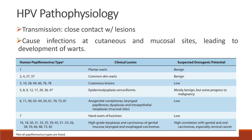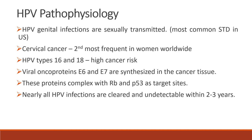Types 16, 18, 30, 31, and so on have high correlation with genital and oral carcinomas, especially cervical cancer. HPV genital infections are sexually transmitted and this is the most common sexually transmitted disease in the United States. It also causes cervical cancer, which is the second most frequent cancer in women worldwide.